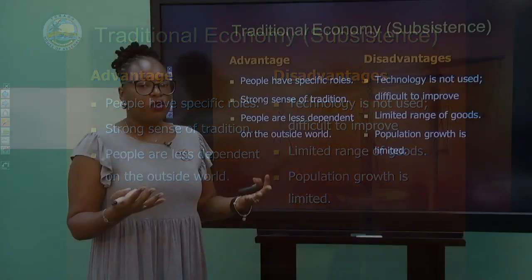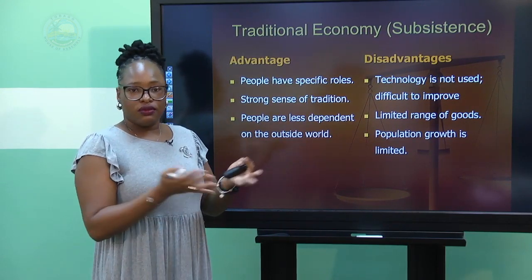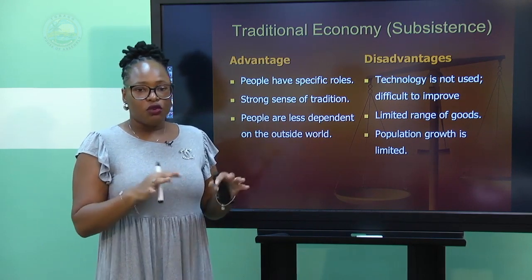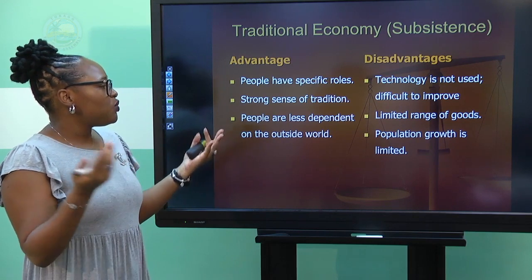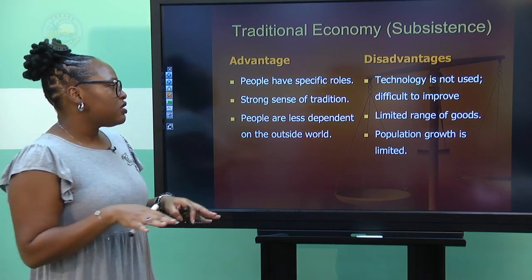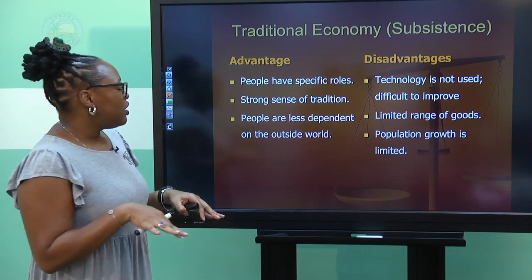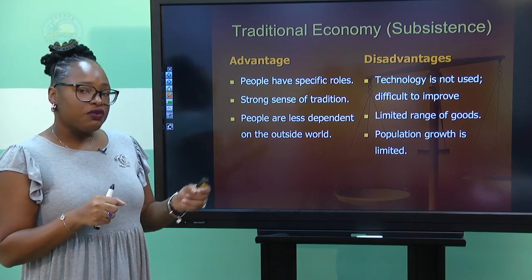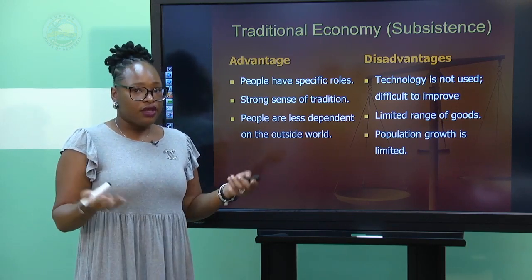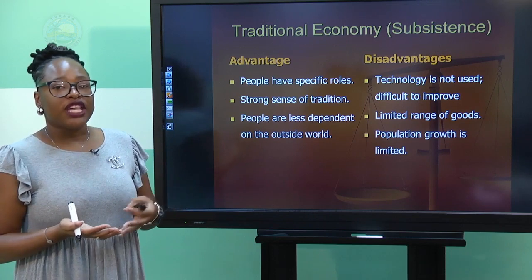Unlike supermarkets today where we have a variety of brands of ketchup, within the traditional system there's just one product they make and use. Population growth is limited — tribes are always small, tight-knit units, whereas Trinidad and Tobago's population is 1.2 million and made up of diverse cultures. So disadvantages again: no technology, no variety of products, very small population. Advantages: people have specific roles, a strong sense of customs and tradition, and no dependence on the outside world — subsistence, where man provides for himself and his family.